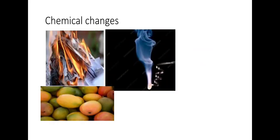There are many more examples: ripening of fruits, burning of paper, burning of magnesium ribbon, cooking of food, and rusting of iron. These are examples of chemical changes. Most chemical changes are irreversible, or permanent.